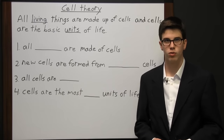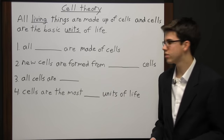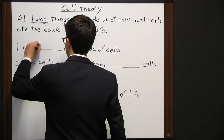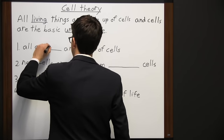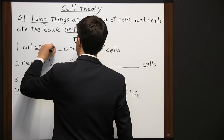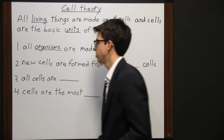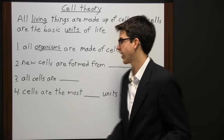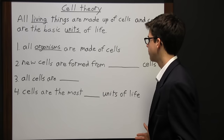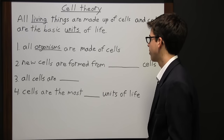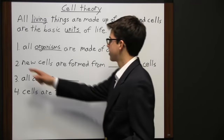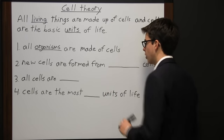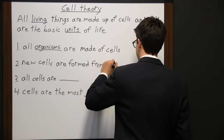Early cell theory was comprised of four statements. The first: all organisms are made up of cells. When I say organisms, that means all living things — basically, everything that lives is made up of cells. The second part of cell theory was that new cells are formed from pre-existing cells.